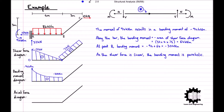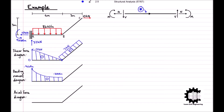The bending moment diagram from point B to point C is a little simpler as the shear force is constant along bar BC. Starting at point B, we have a bending moment of negative 30 kilonewton meters. Moving along the bar from point B to point C, the shear force is negative, which means the bending moment will increase, and the bending moment will be equal to the negative of the area of the shear force diagram.